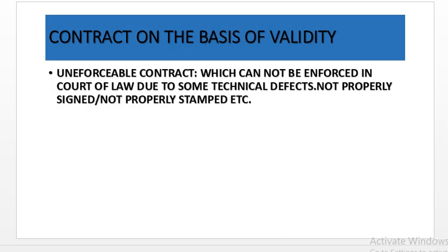Unenforceable contract is one which cannot be enforced in the court of law due to some technical defect — they are not properly signed or not properly stamped.